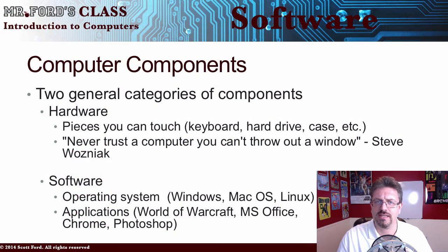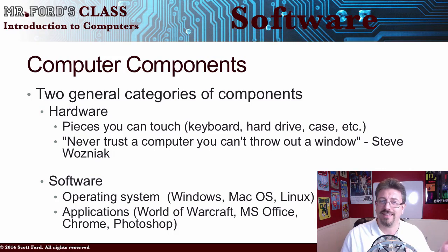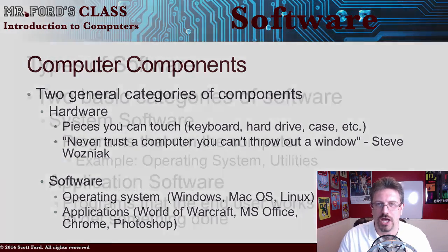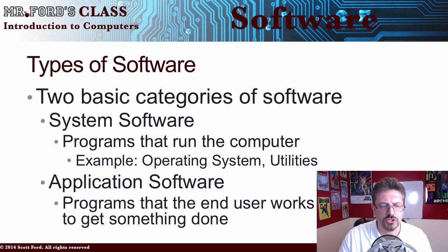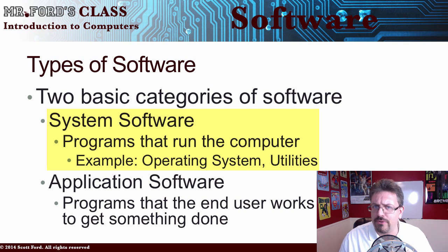So let's get going with what we're going to talk about, and that would be software. If you remember from the previous videos, we talked about the fact that there are two general components to computers. There's the hardware portion, which we've talked about in the previous video. Now we're going to talk about software, and we break software down into two groupings: system software and application software. System software is the stuff that runs the computer itself — working with your hardware, your operating system, your utilities.